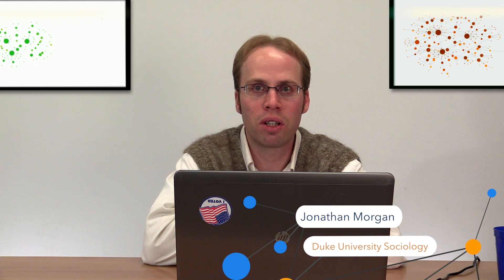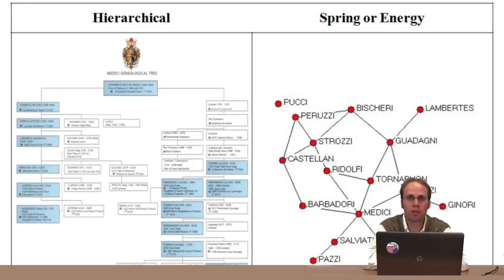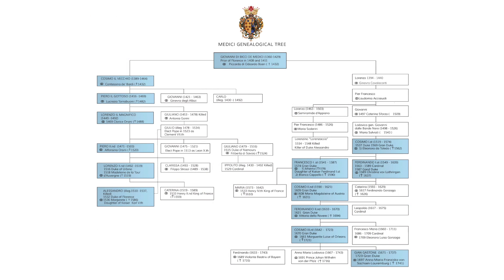The third major element of network visualization is layout. There are two major kinds of layouts with lots of variation between. The first is a hierarchical layout, and the most classic example is a family tree. In the handout for this module, we have the Medici family tree, where we can see old Bruno at the top and then his descendants going down.